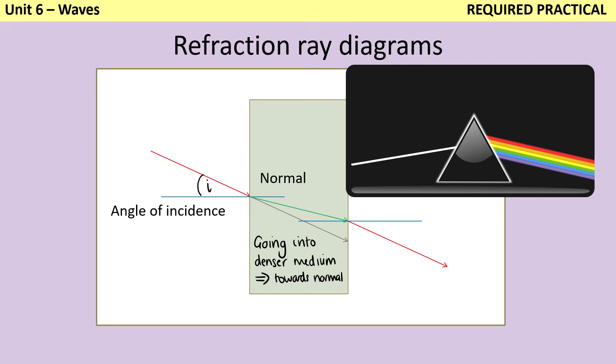So the reason that this refraction happens is that as the wave enters the more dense medium, it slows down. Now, if the wave was traveling perpendicular to the surface that it's passing through, then the whole wave front slows down equally. So the whole light ray slows down and then speeds up together and you don't see the refraction. But where it hits the change in medium at an angle, it basically pivots around that point.